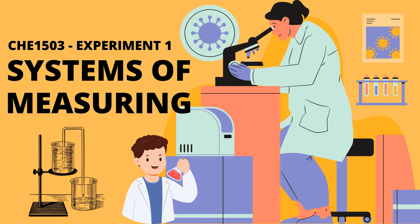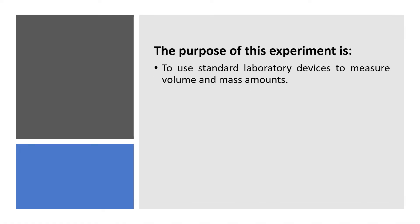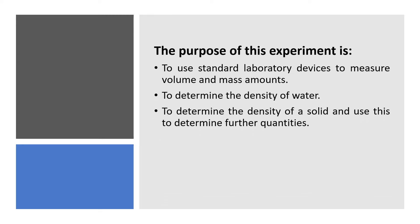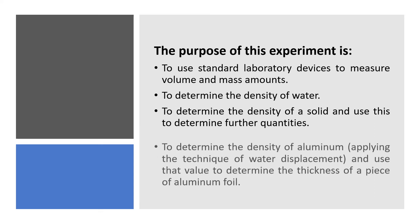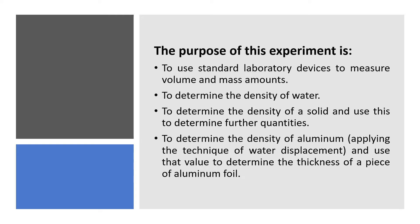Welcome to Science Era. In this video we're going to discuss systems of measuring — Experiment 1 from module CHE 1503. The purpose of this experiment is to understand standard laboratory devices to measure volume and mass amounts. We're going to determine the density of water, determine the density of a solid, and use this to determine further quantities. Lastly, we'll determine the density of aluminum and use that value to find the thickness of a piece of aluminum foil.